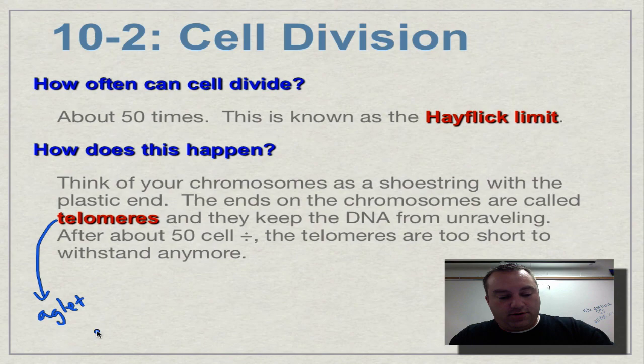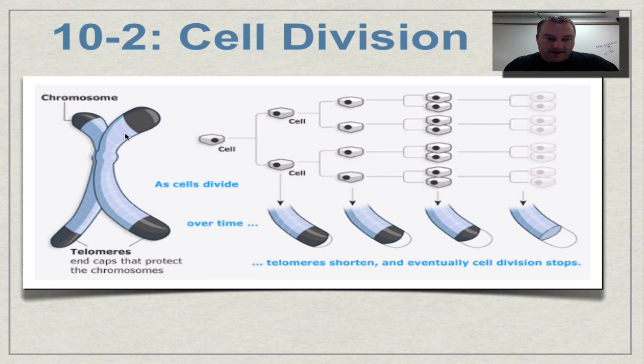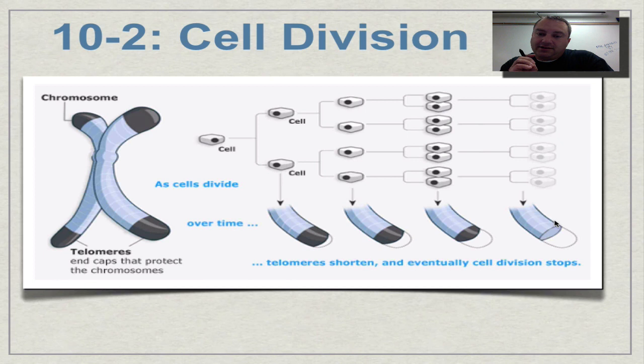Let's look at a picture that explains this a little better. Here's a chromosome: there's one chromatid and there's the other chromatid, and these black tips are the telomeres. Every time the cell goes through division the telomere gets shorter and shorter, until finally if it divided one more time there'd be no telomere left and the DNA can unravel. This is the area where you reach the Hayflick limit.